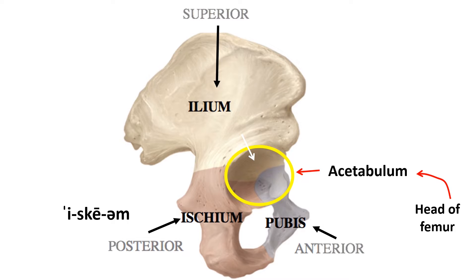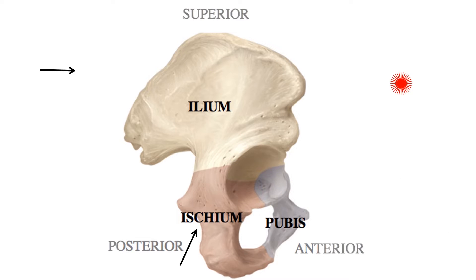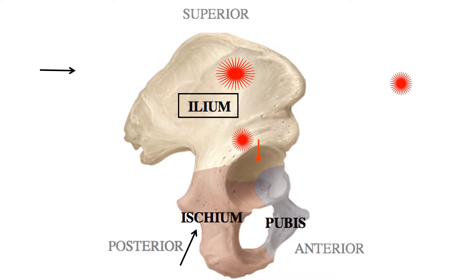The ilium forms the superior part of the acetabulum, the pubis forms the anterior part, and the ischium forms the posterior and inferior part. The ilium is made of a thick lower part called the body of the ilium. From the body it has its share in the formation of the acetabulum. There is also a flat bone extending from the body that looks like a wing of a bird — therefore it is called the ala.